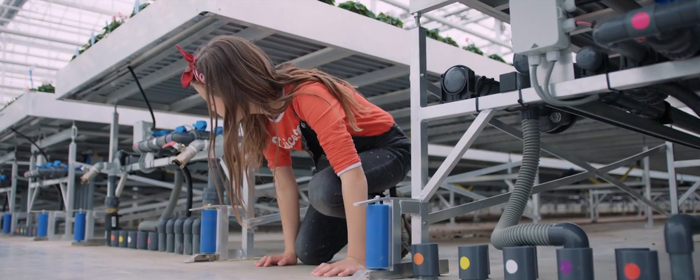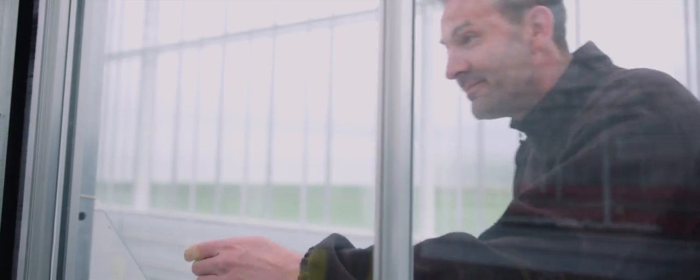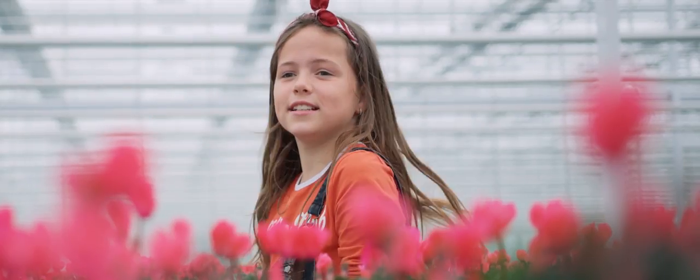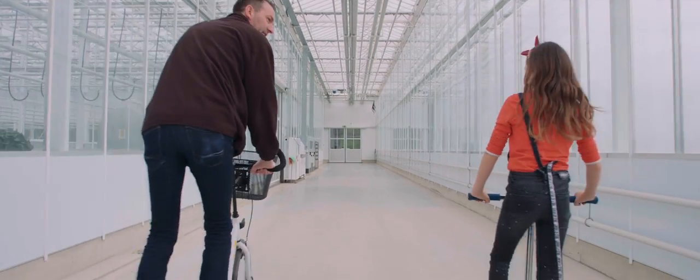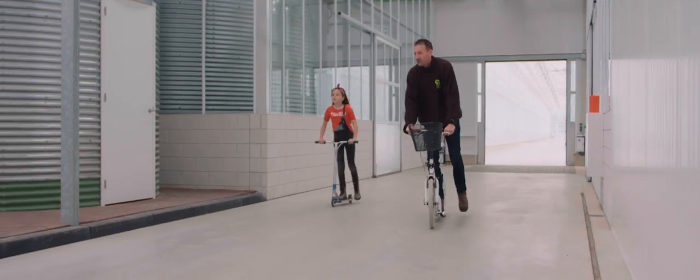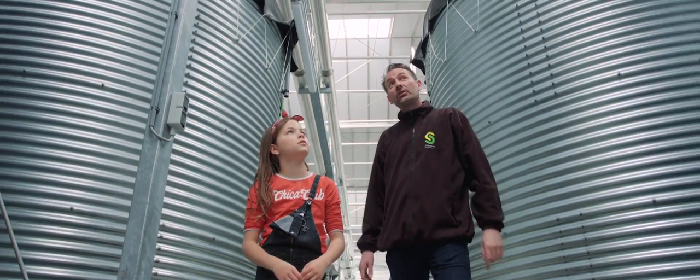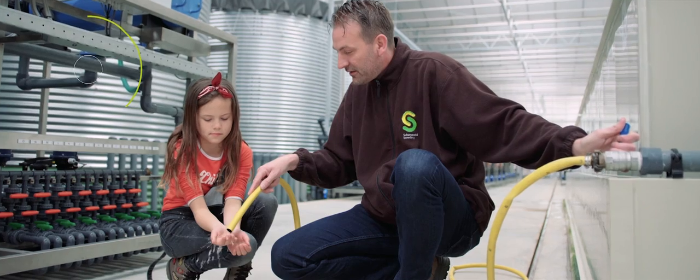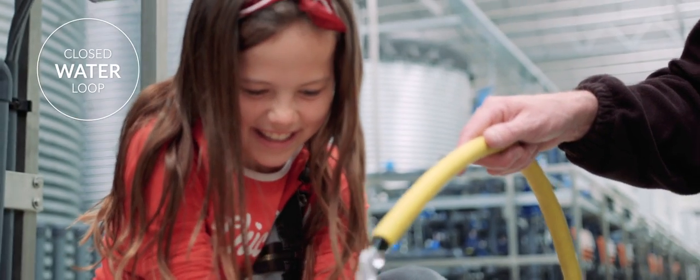There are a lot of tubes here. Does water come from all of them? Okay, so every plant gets its own water with all the nutrients it needs to grow well. And each of these tanks has a different water recipe. And the used water is cleaned and reused again.